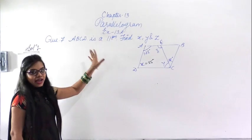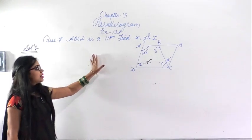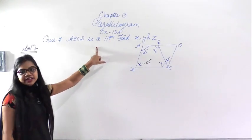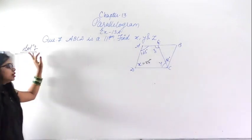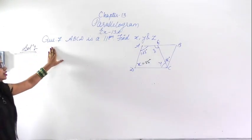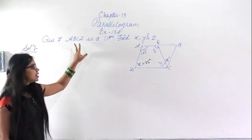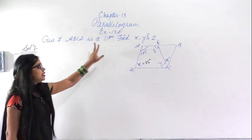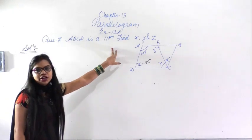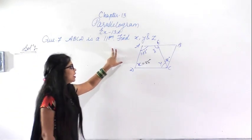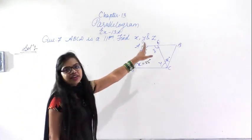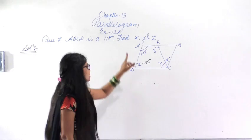This is chapter 13, parallelogram exercise 13A, question number 7. In this question it says that ABCD is a parallelogram. You have to find the value of x, y, and z.